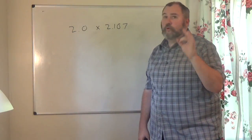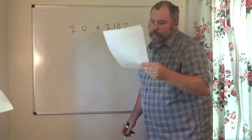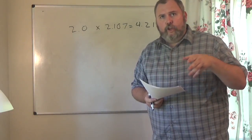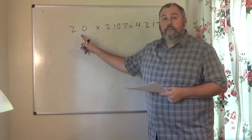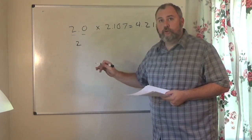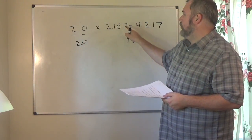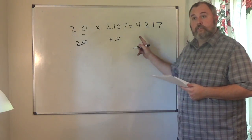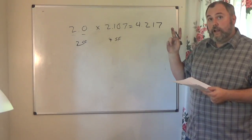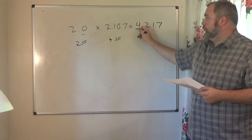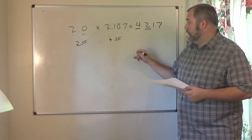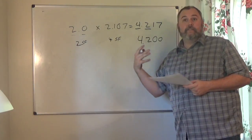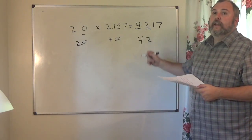This problem: 2.0 times 2.107. Multiply it out and you get 4.214. We need to round to the correct accuracy. How many significant digits in 2.0? Two. How many in 2.107? Four. So we round to 2 significant figures. The first two sig figs are 4 and 2. The 1 tells the 2 to stay the same. We get 4.2 — the 1 and 7 become zeros, and since they're trailing zeros at the end of a decimal they get dropped. Final answer is 4.2.